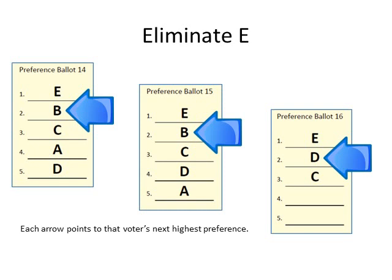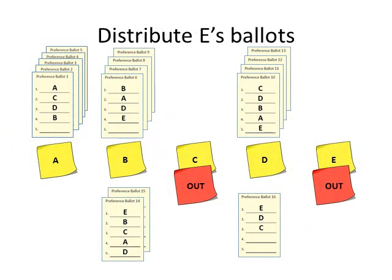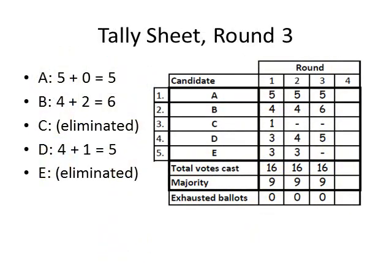Inspecting the 3 ballots in the stack for E, we see that the voter's next highest preference on ballots 14 and 15 is B, and the voter's next highest preference on ballot 16 is D. So we put ballots 14 and 15 below the sticky note for B, and ballot 16 below the sticky note for D. The ballots below the sticky notes are counted and added to the number in the previous column of the tally sheet.